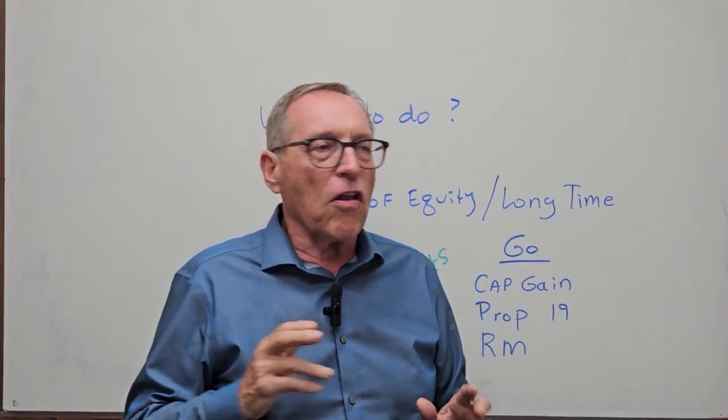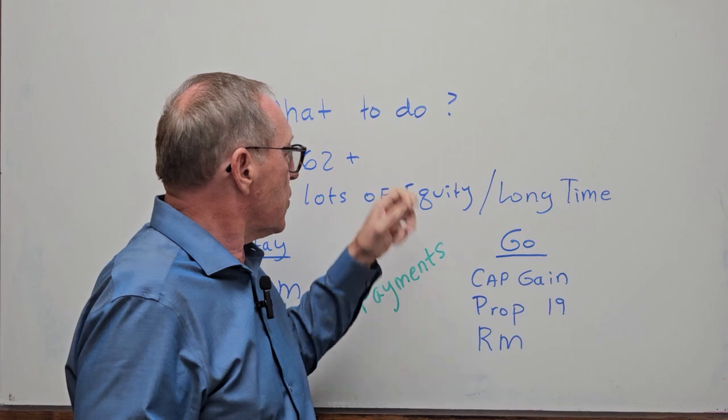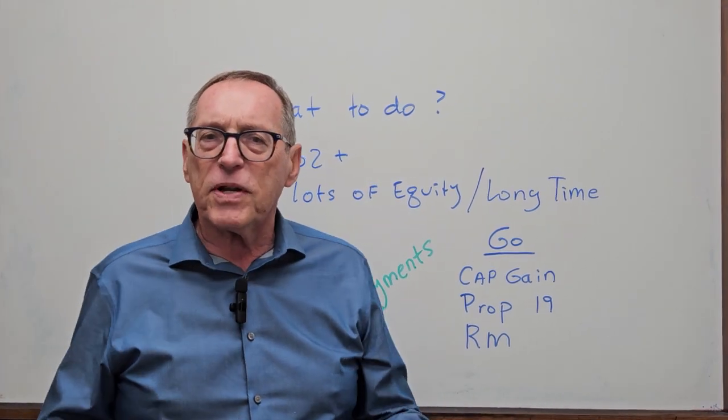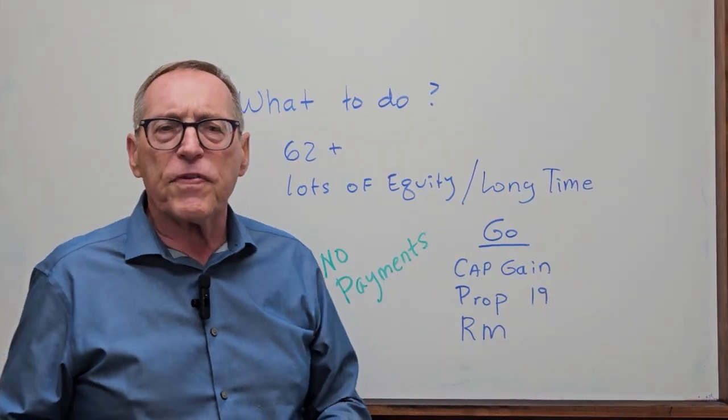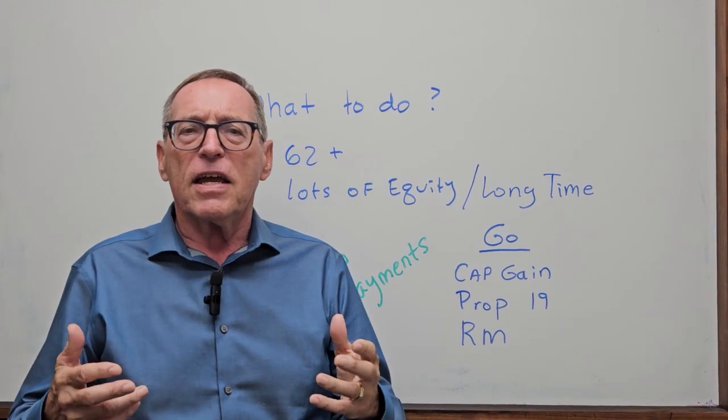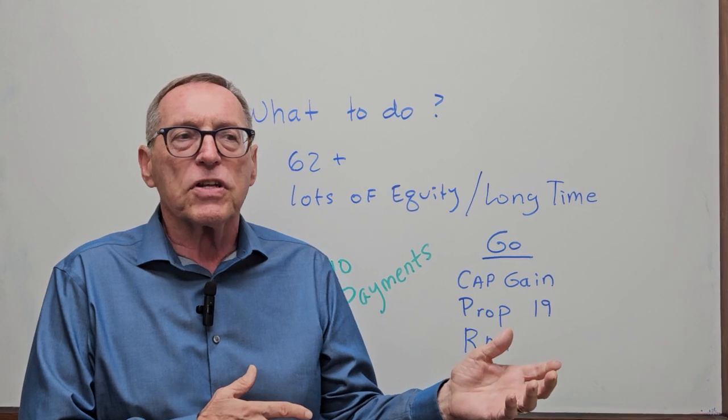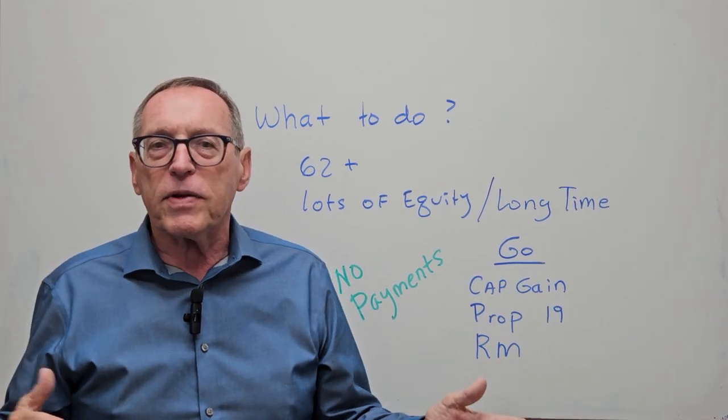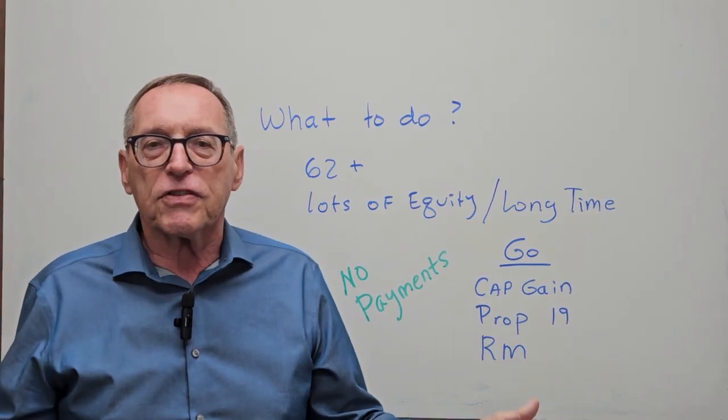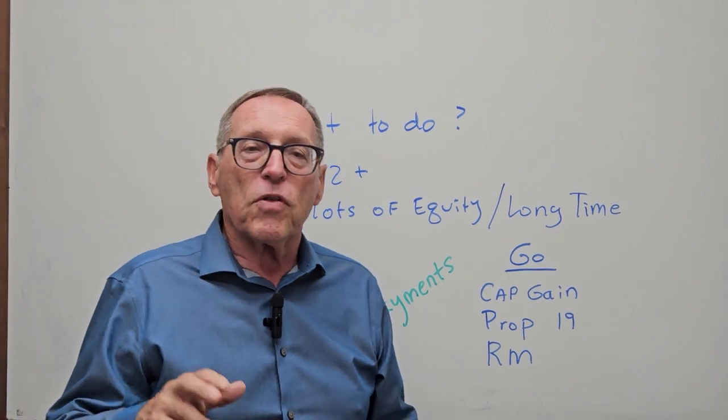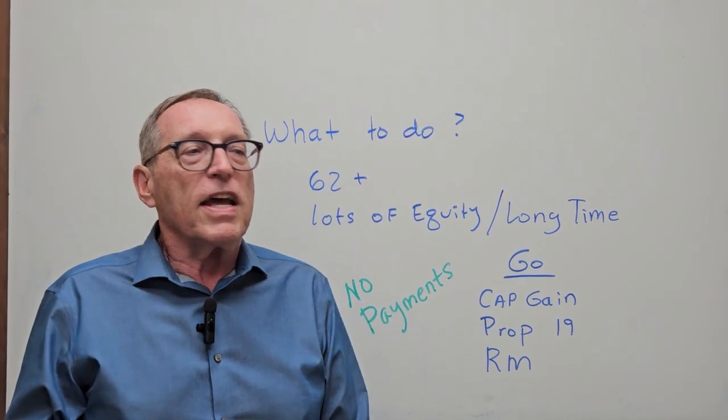Let's say a person, they've been here a long time. They're 62 years or plus. They got lots of equity in their house and they've been in the house for quite a few years. So should they stay? Well, maybe they got a mortgage, maybe they don't. But even if they don't, they've got lots of equity. If they do, they probably still got lots of equity, but they're making payments.